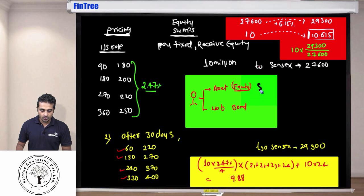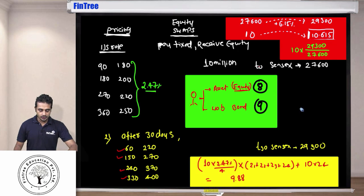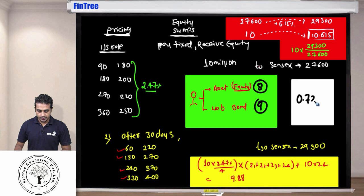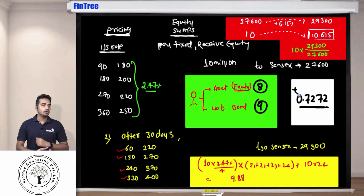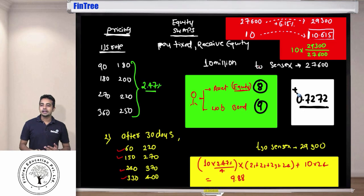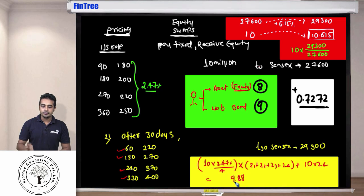Put 10.615 into memory slot 8 (asset) and 9.88 into memory slot 9 (liability), then compute 8 minus 9. The answer is 0.7272 million — a profit. This party made a profit because both factors worked in its favor: the liability value fell from 10 million to 9.88 million (a benefit of 0.12), and the equity asset grew to 10.615 million (a benefit of 0.61), giving a total benefit of 0.72.